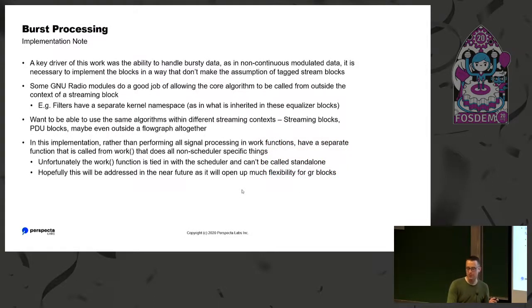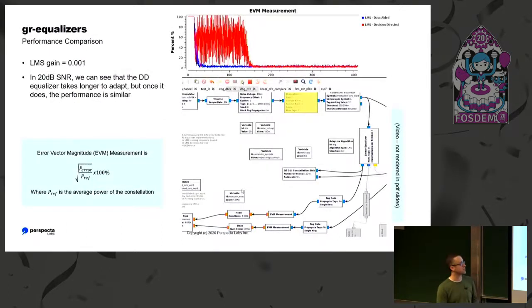One note I mentioned briefly: one of the key drivers of this is we wanted to handle bursty data. We wanted some equalizers. A lot of the blocks in GNU radio, including these equalizers, have all the functionality baked into the work function. So just an implementation note, I really tried in this implementation to pull the signal processing into a function that could be called from outside of GNU radio, that you could just use this as a signal processing library. So looking forward, in work I'm doing, I'm trying to do that more. Hopefully that's something we address in the future of GNU radio.